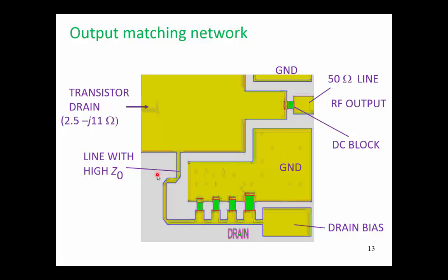This line is an RF line. It is about lambda on 4 long at our operating frequency. And here is our bank of capacitors selected much the same way as we did with our input matching network.